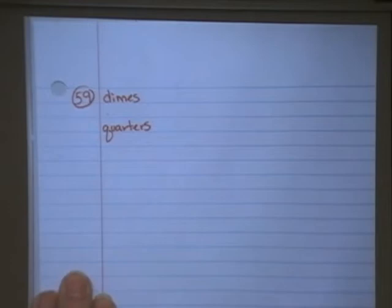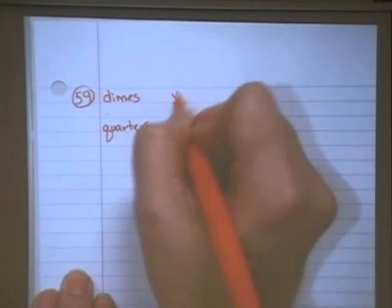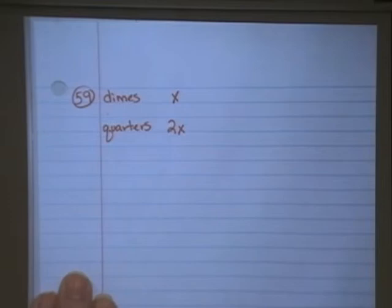Since it says suppose you have $7.80 in dimes and quarters, how many of each coin do you have if you have twice as many quarters as dimes? I know the least amount about dimes, so that is my x. Twice means to multiply times 2.